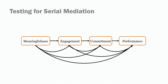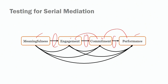The model we'll be testing has meaningfulness influencing job engagement, then job engagement influencing job commitment, then job commitment influencing performance — in a sequential order. There is a distal relationship between meaningfulness and performance, and that relationship is mediated by engagement and commitment. There is no limitation on the number of mediators you can have in between — here we have only two, but we could have many mediators.